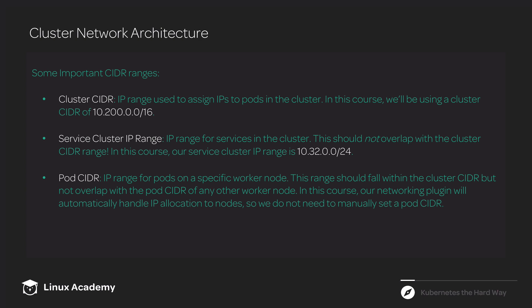What we've already done to set up our networking is allocate our cluster CIDR and our service cluster IP range, and we've made sure to pass those values into our services as necessary — we did that in some of the previous lessons. Another thing we've already done is set up kube-proxy. Kube-proxy plays a role in networking by creating iptables rules to route traffic appropriately, including routing traffic to pods running on other worker nodes and to services as well.